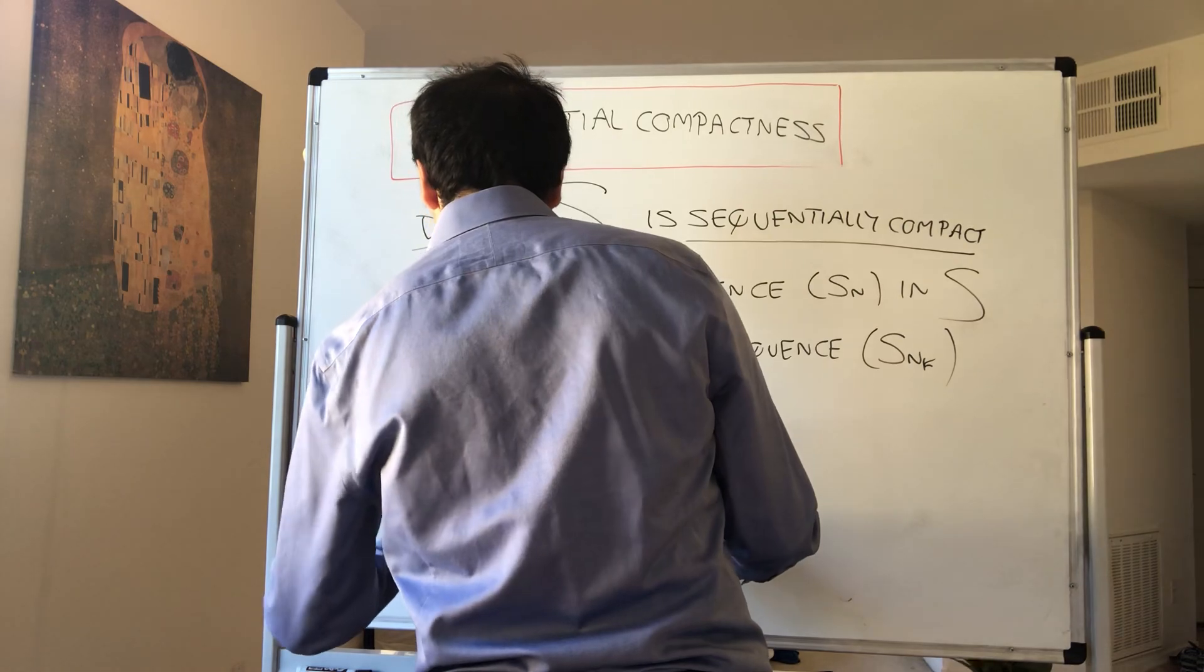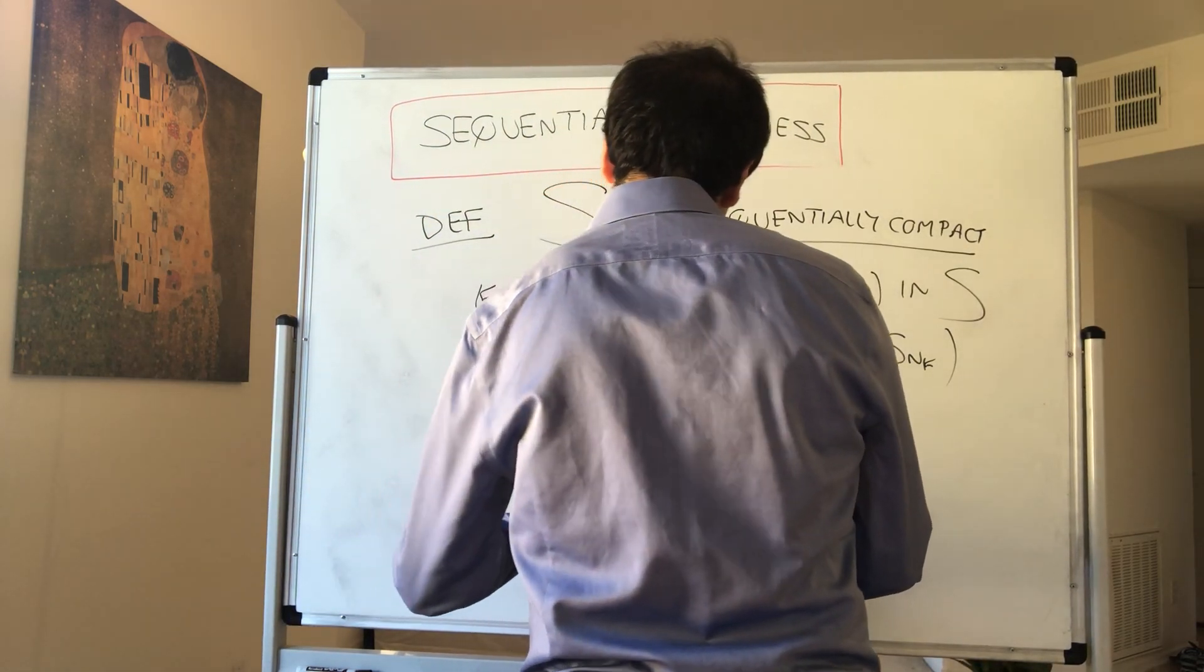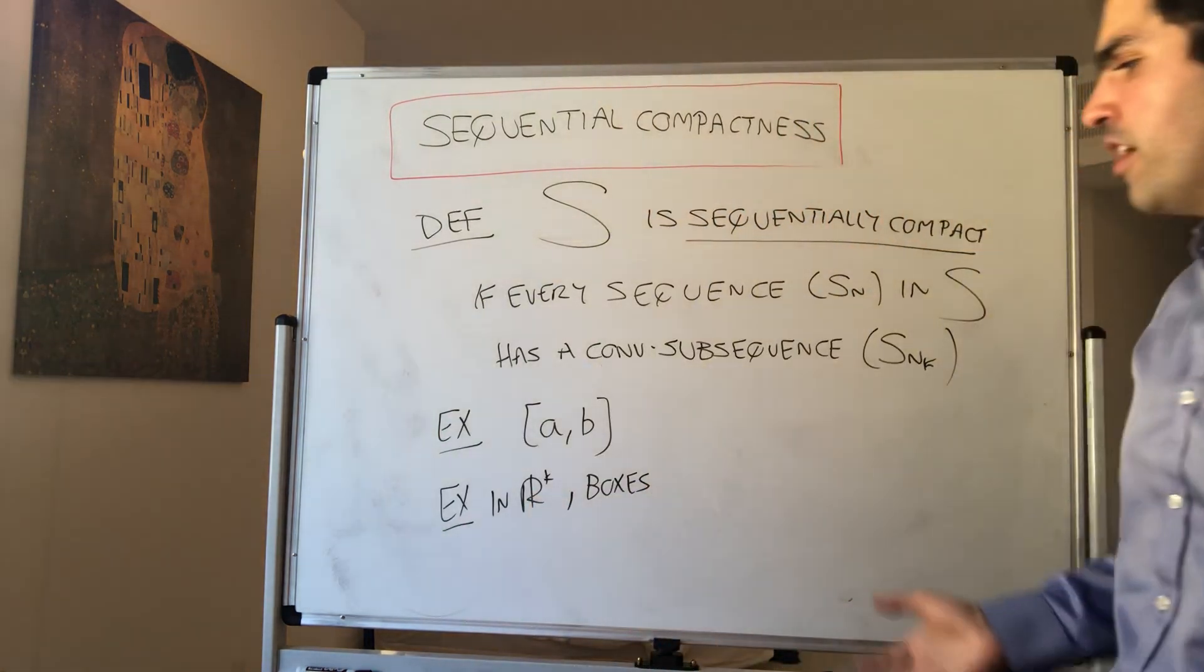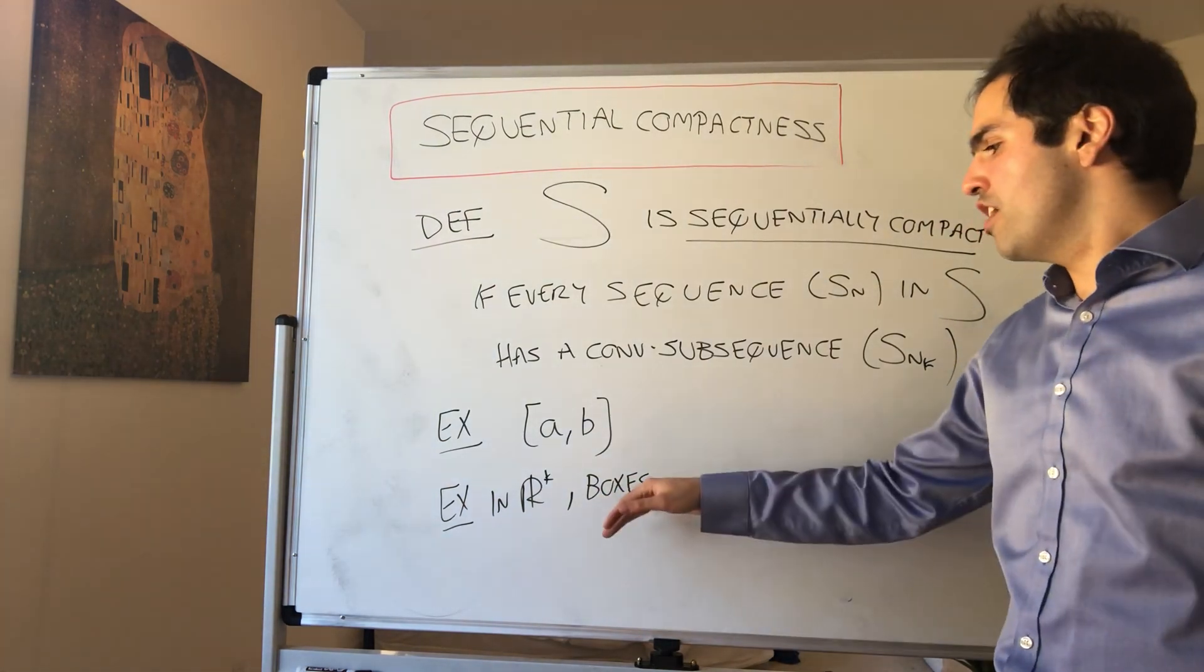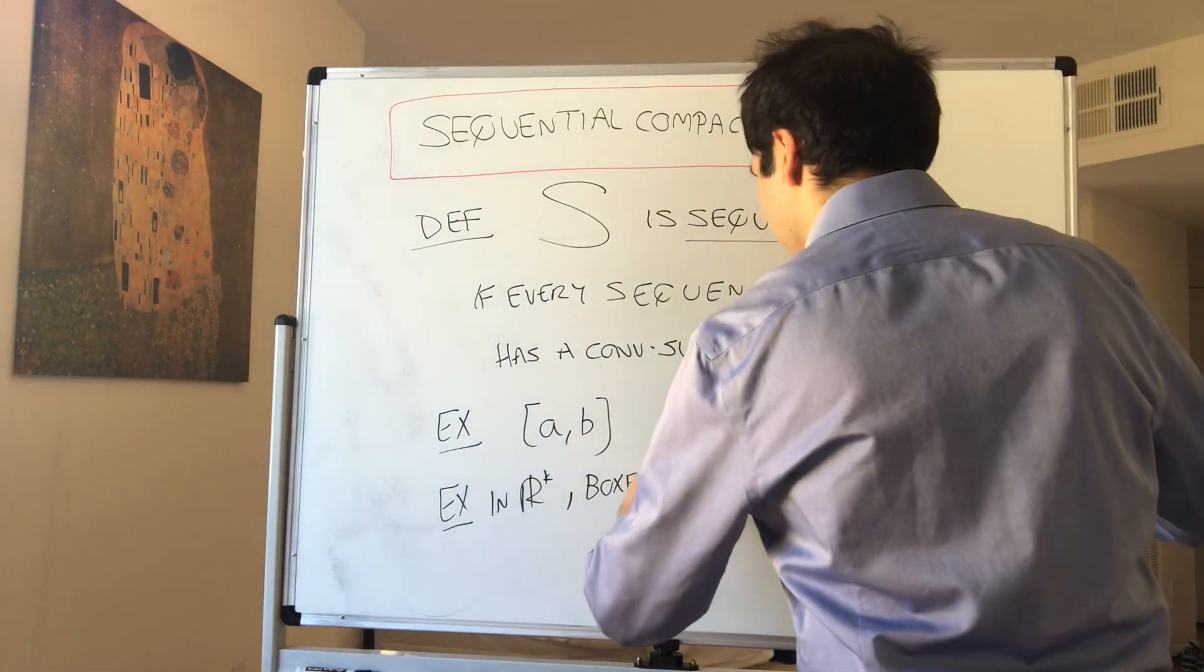Or for instance, in R^k, you have boxes, because again, if you're a sequence in a box, then you're bounded, and therefore by Bolzano-Weierstrass, again, you have a convergent subsequence.